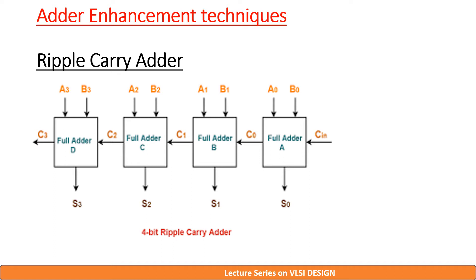The first adder architecture is a 4-bit ripple carry adder. A ripple carry adder has a finite delay in obtaining the final output, as carry has to be propagated from one stage to the other. In normal adders of 4 to 8 bits, this delay is insignificant. But delay becomes prominent in case of 64 or 128-bit adders. To increase the speed of adders, faster carry generation techniques are used. These techniques improve speed of the adder but increase the chip area.